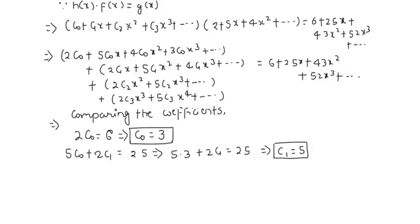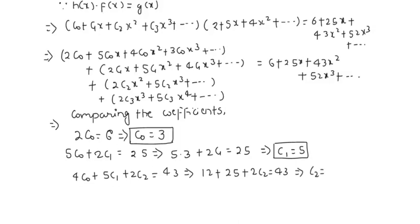Comparing the coefficient of x²: 4c₀ + 5c₁ + 2c₂ = 43. Substituting known values: 4(3) + 5(5) + 2c₂ = 43, which gives 12 + 25 + 2c₂ = 43, so 2c₂ = 43 − 37 = 6, giving c₂ = 3.